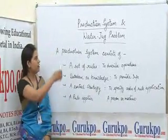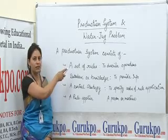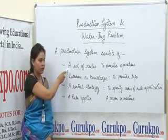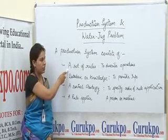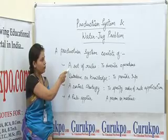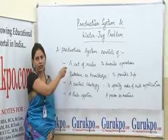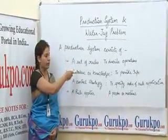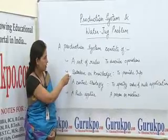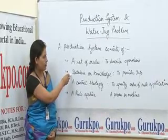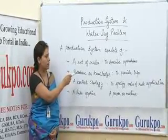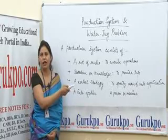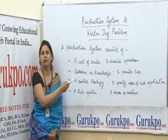We can see the representation of a production system. A production system consists of a set of rules, in which complete overall operations are defined and described. Second, we shall have a database or knowledge in that system, which can provide information by which we can develop a solution.